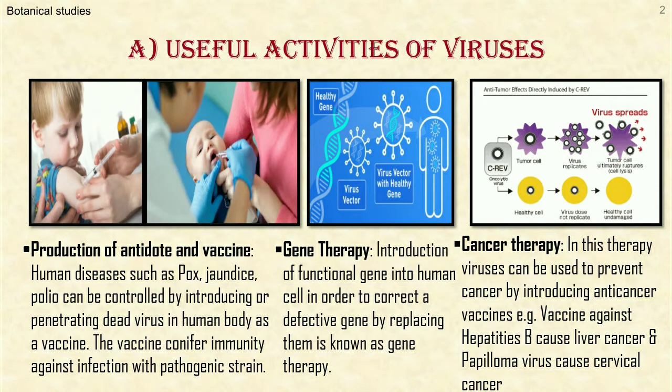Useful activities of viruses. 1. Production of antidote and vaccine. Human diseases such as mumps, pox, jaundice, and polio can be controlled by introducing or penetrating dead virus into the human body as a vaccine. Thus, different vaccines can be prepared and may be used for controlling virus diseases.